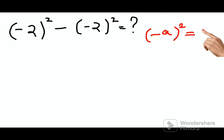So (-2)² is actually nothing but 2², that is 4. And here also this becomes 4, and this is a minus sign, so this will now become 4 - 4 = 0.